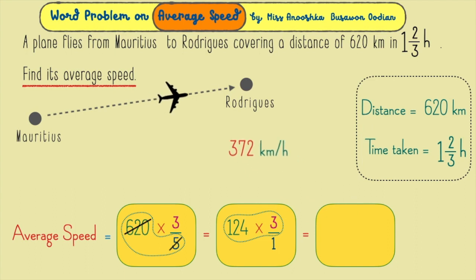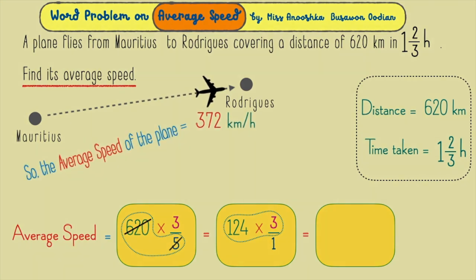So, the average speed of the plane is 372 kilometers per hour.